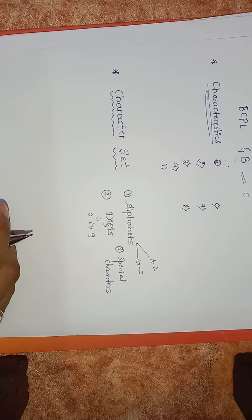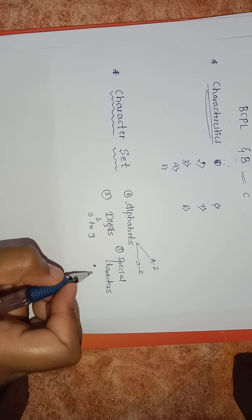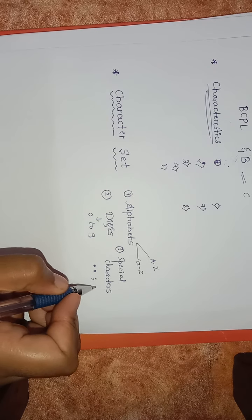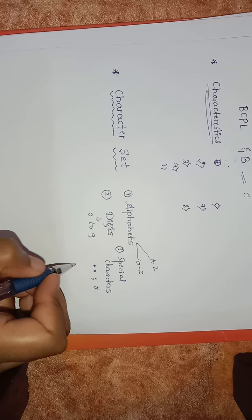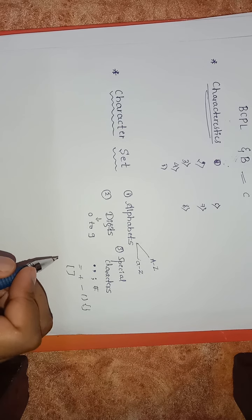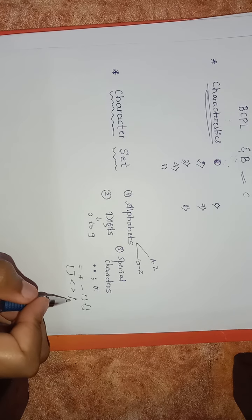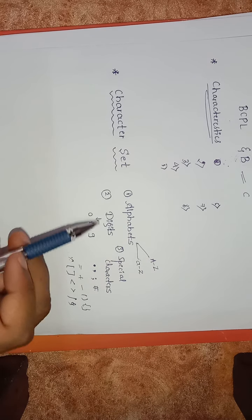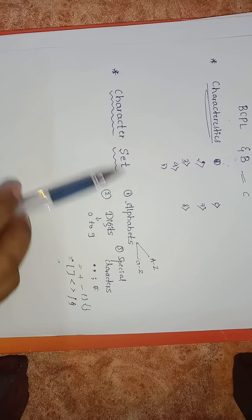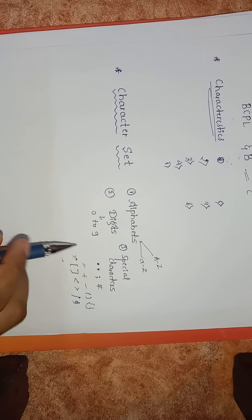Special characters include symbols found on the keyboard: full stop, comma, colon, hash, equality sign, plus, minus, brackets, flower brackets, square brackets, less than, greater than, slash, percentage, and many more. All of these form the character set of the C programming language — uppercase A to Z, lowercase a to z, digits 0 to 9, and special characters.